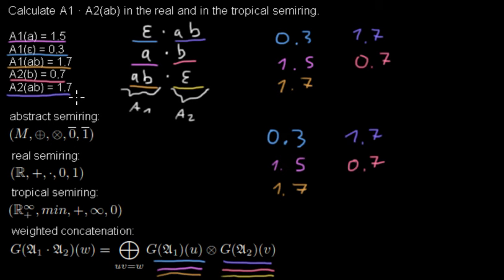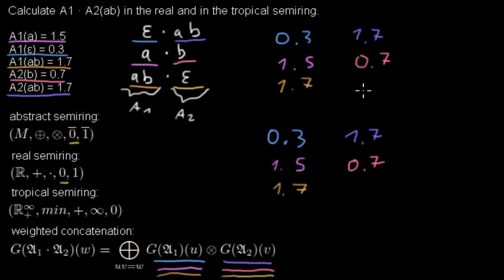If it's not in the automaton, then we need the neutral element. So for the real semi-ring it's 0, and for the tropical semi-ring it's infinity.